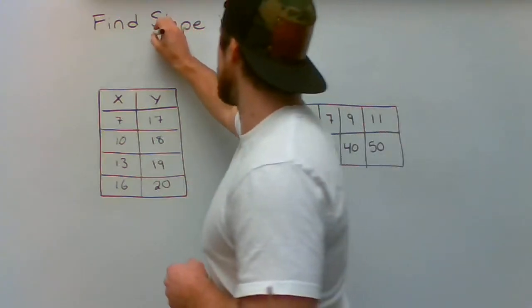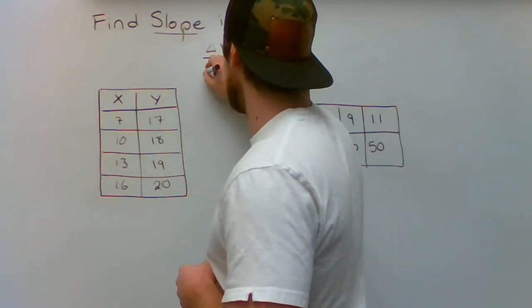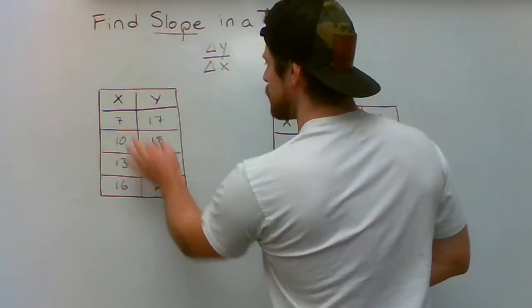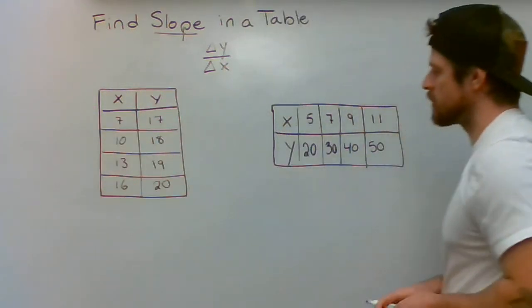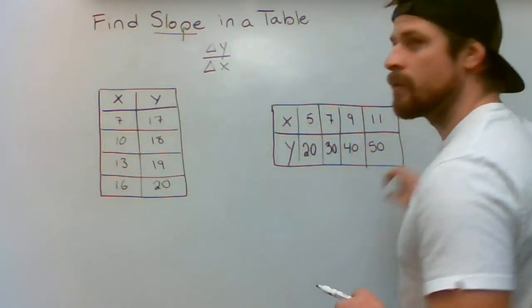So all you need to do to find slope is figure out what your change in Y over your change in X is. This is your Y column, this is your X column. In the horizontal table, X row and Y row.